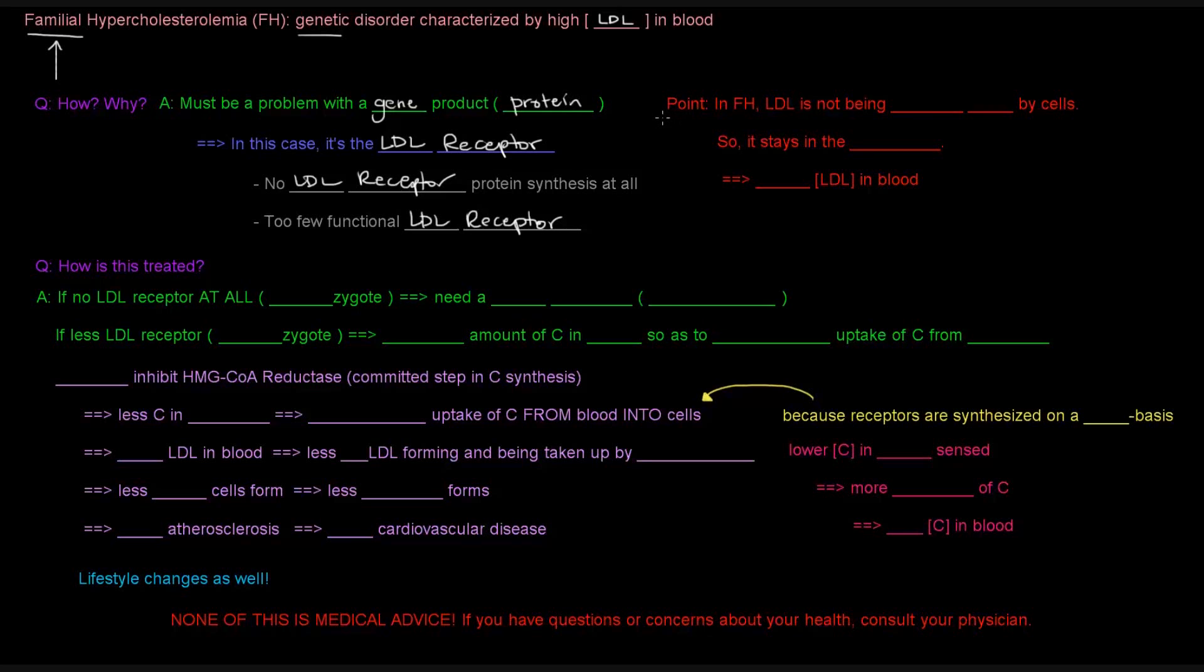The take-home point is that in familial hypercholesterolemia, LDL is not being taken up by cells. So what ends up happening is that the LDL stays in the blood. There's a high concentration of LDL in the blood, which is damaging because it can form oxidized LDL, foam cells, and so on.